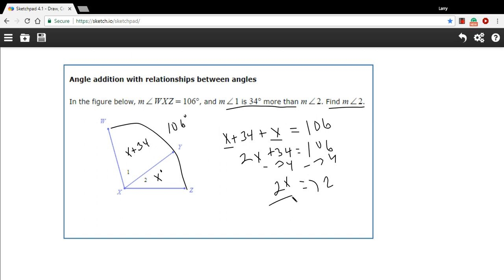And then we can divide by 2. And so, X should equal 36 degrees.